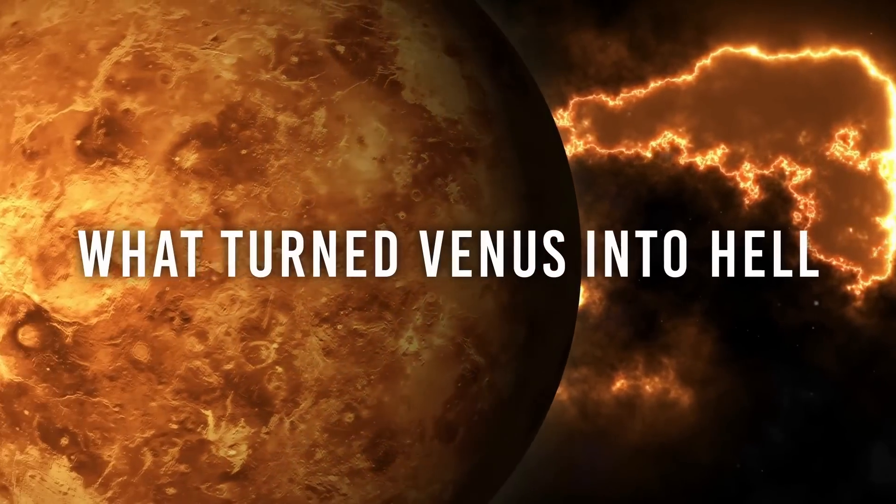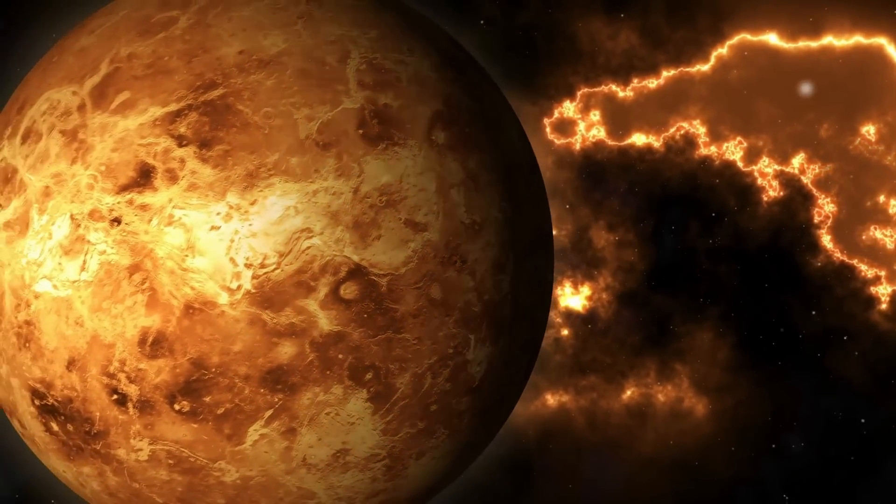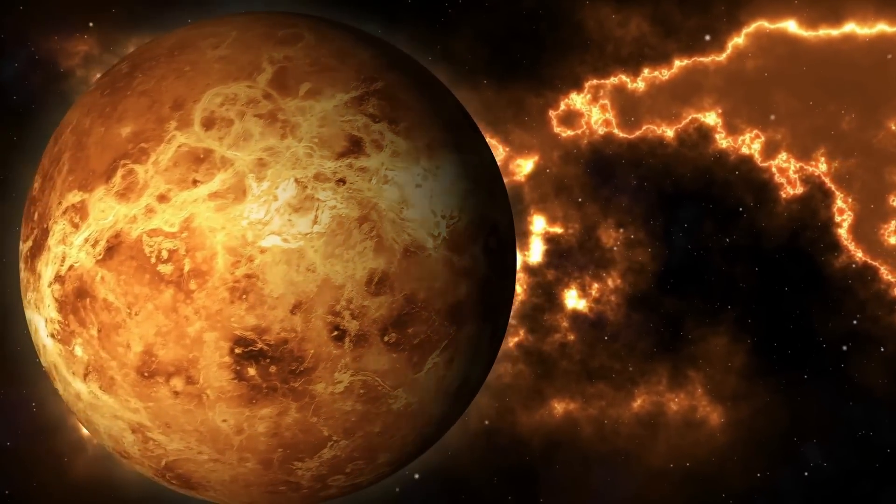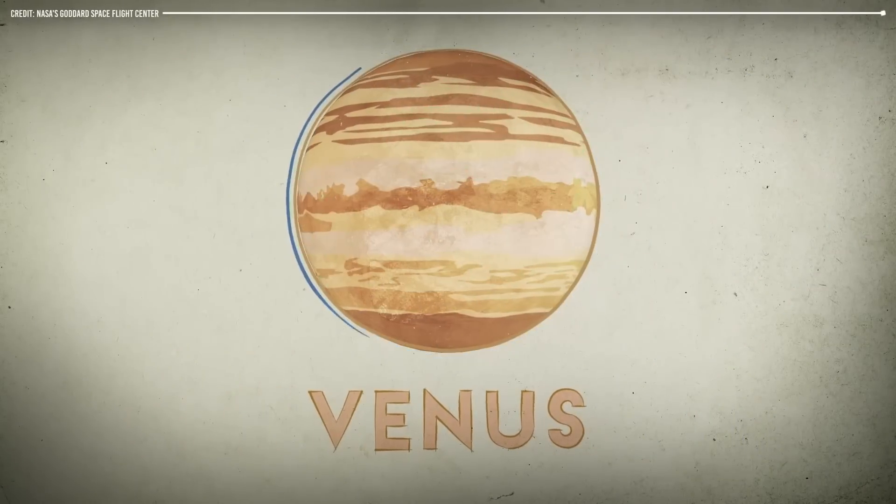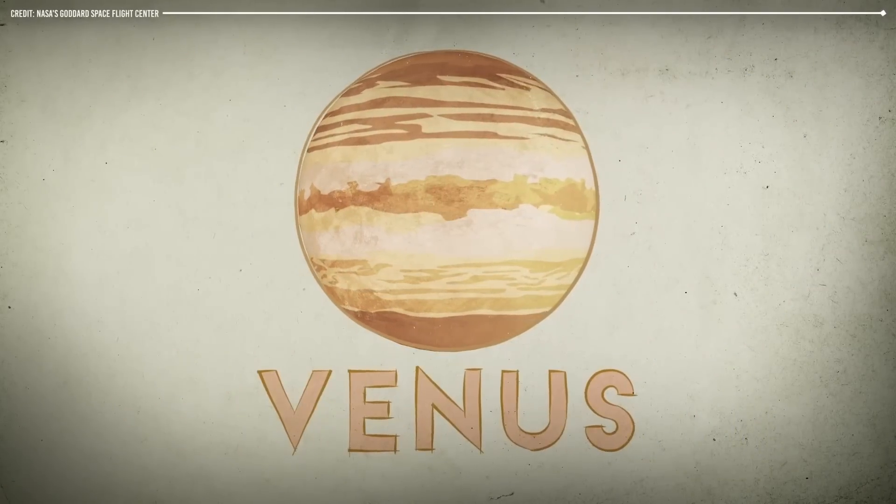What turned Venus into Hell? Venus is often called Earth's sister planet because it is similar in size, mass, and composition. However, the similarities end there.